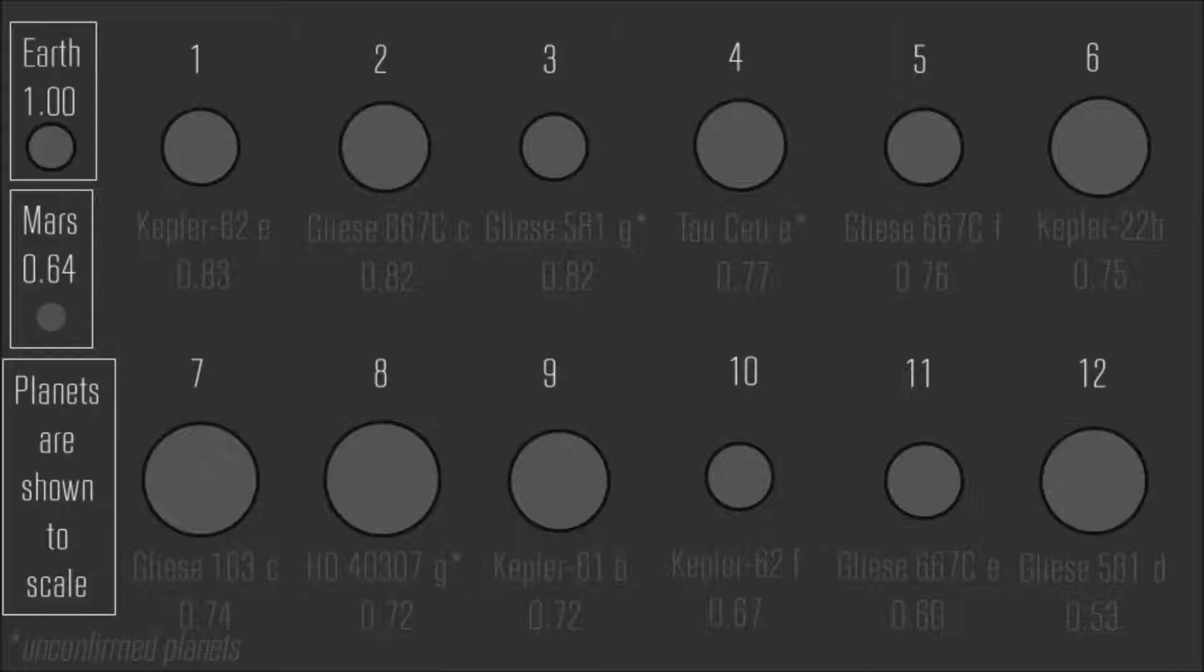Exoplanet is the name given to planets in orbit around stars other than our Sun. The number under the planet's name is the Earth Similarity Index. A value of one means identical to the Earth.